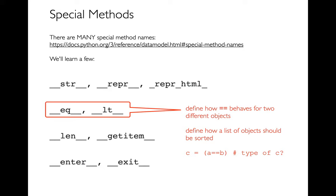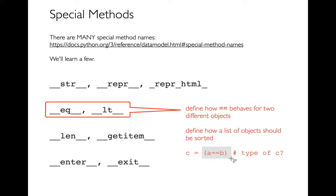Second, I'm going to be talking about the equal equal operator — are two objects the same? If I say C equals A equal equal B, the type of C is probably Boolean 99% of the time, but it actually depends on what type A and B are. If either A or B is a pandas Series, I wouldn't get a single Boolean. Instead, comparing two pandas Series gives you a Series of Booleans — one per element. So the people writing pandas had to basically hijack that equal equal operator, and we're going to learn how to do that for our own new types.